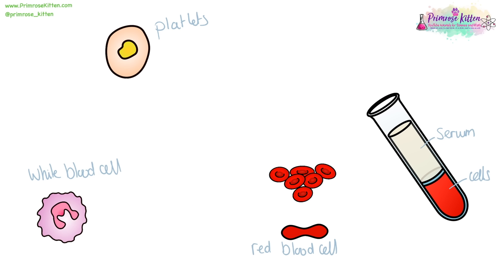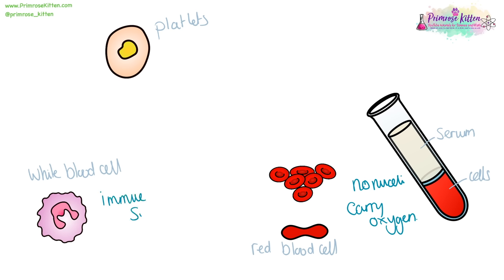Blood is made up of several components. The actual colour of blood is a pale yellow colour - this is the serum, the liquid component of the blood. The cells give it its actual colour. Red blood cells, the cells that give blood its colour, have no nuclei, so they have more space to carry oxygen, which is their main function. White blood cells are part of the immune system. And platelets are fragments of cells, important for things like clotting.